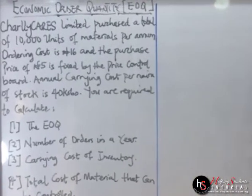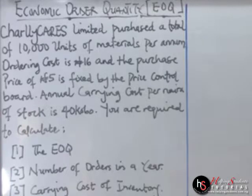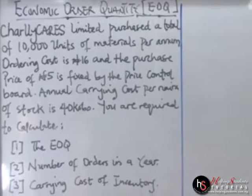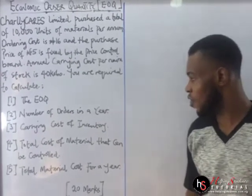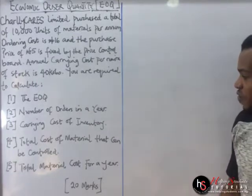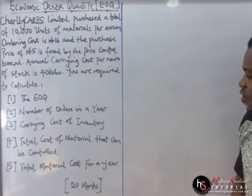Janikers Limited purchased a total of 10,000 units of material per annum. Ordering cost is 16 Naira and the purchase price of 5 Naira is fixed by the price control board. Annual carrying cost per stock of inventory is 40 kobos. You are required to compute the EOQ, number of orders in a year, current cost of inventory, total cost of material that can be controlled, and total material cost for a year.